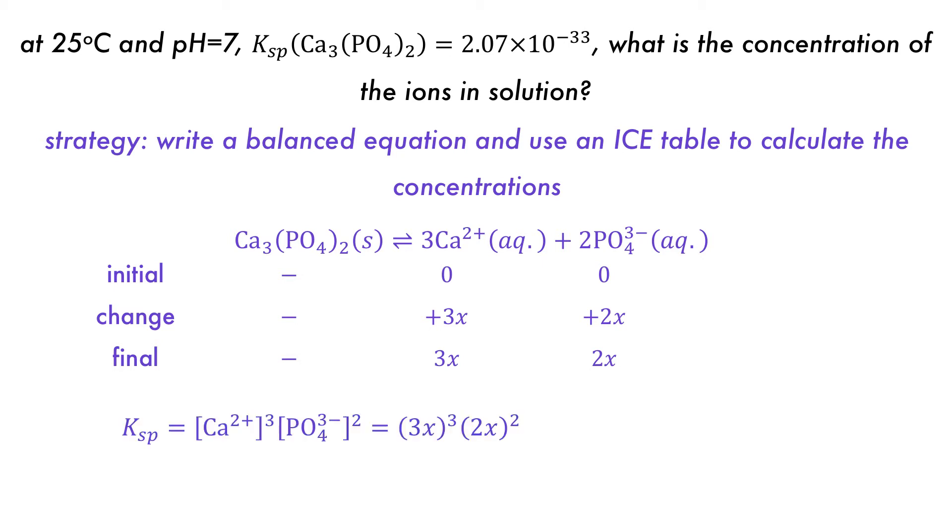Using this ICE table, it can be determined that Ksp is equal to 108x to the power of 5, and that x, the concentration of the salt dissolved, is 1.14 times 10 to the minus 7 moles per liter. This can then be used to determine the ionic concentrations, but remember that they are 3x for calcium and 2x for phosphate.